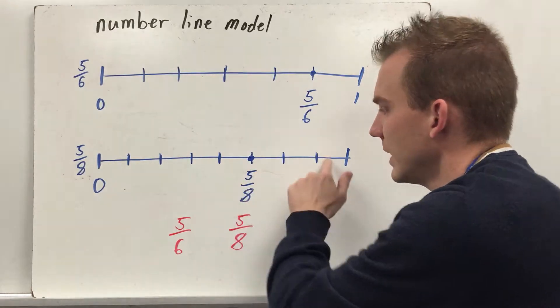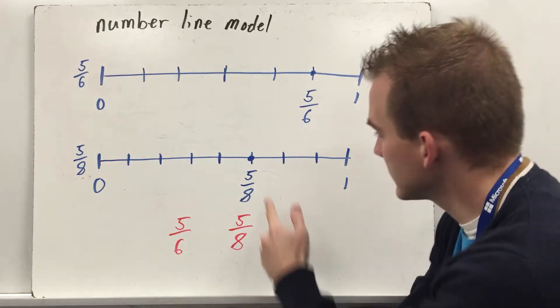One, two, three, four, five, six, seven, eight equal parts, so my denominator is eighths, here is five-eighths.